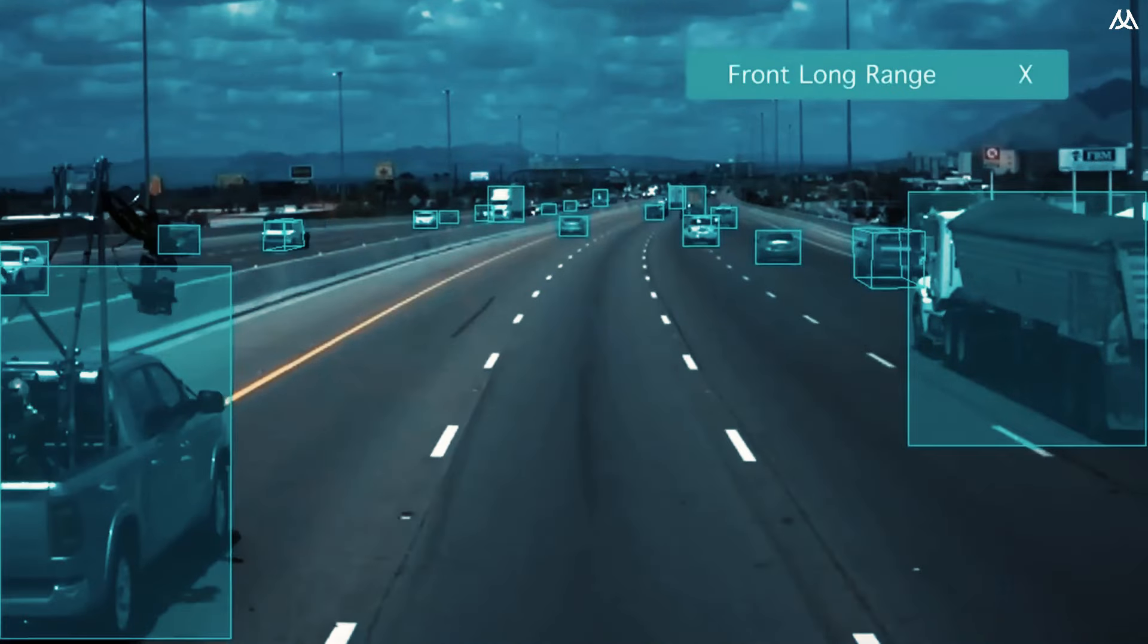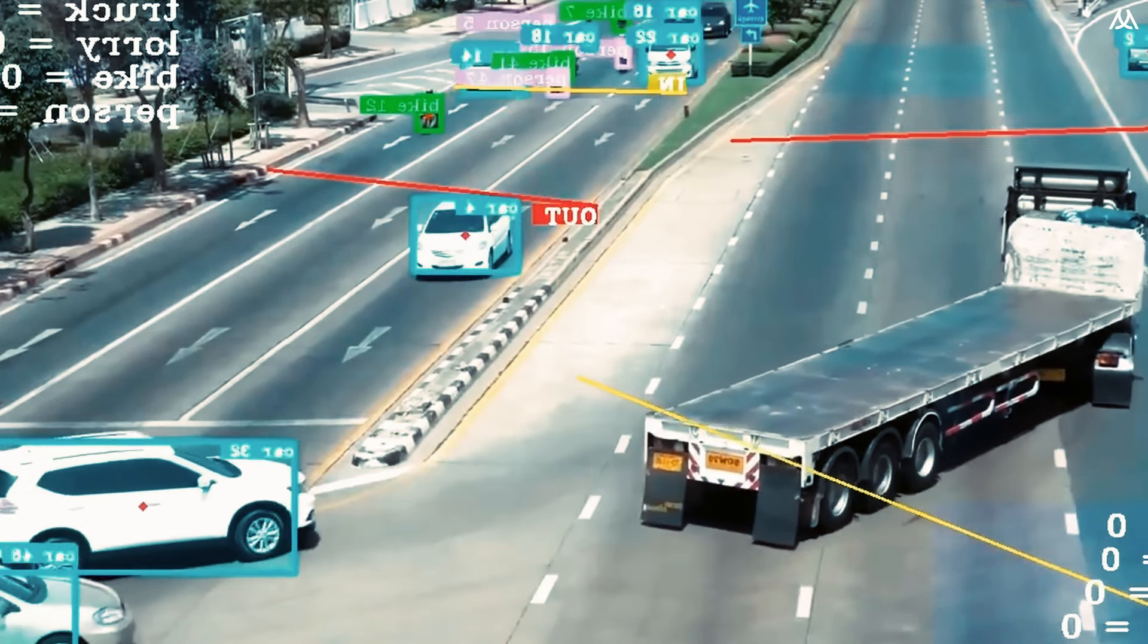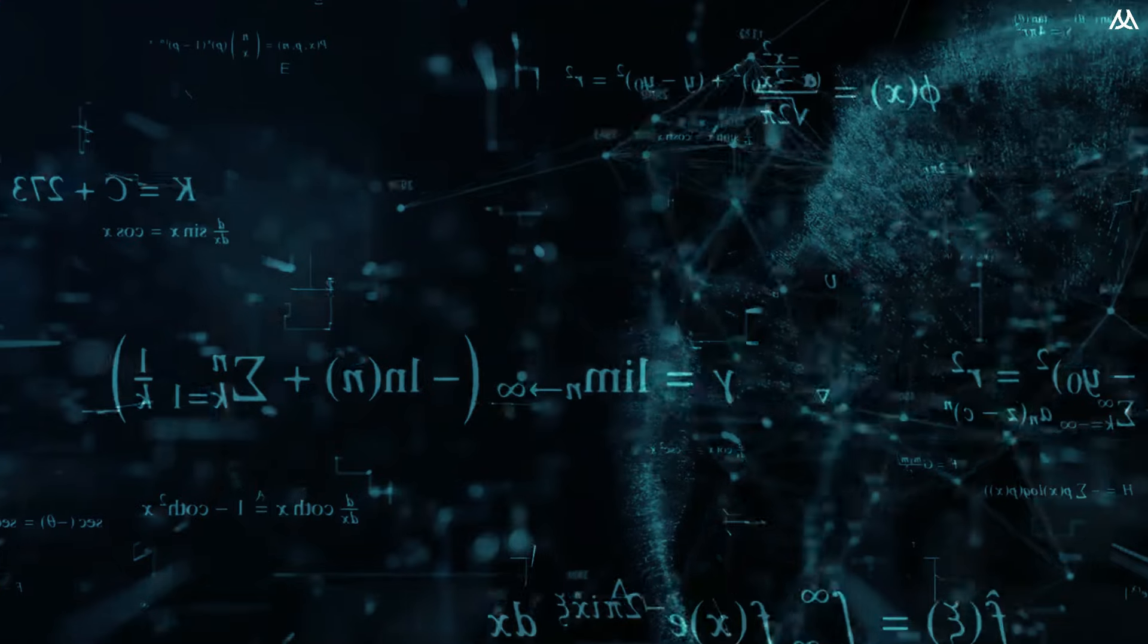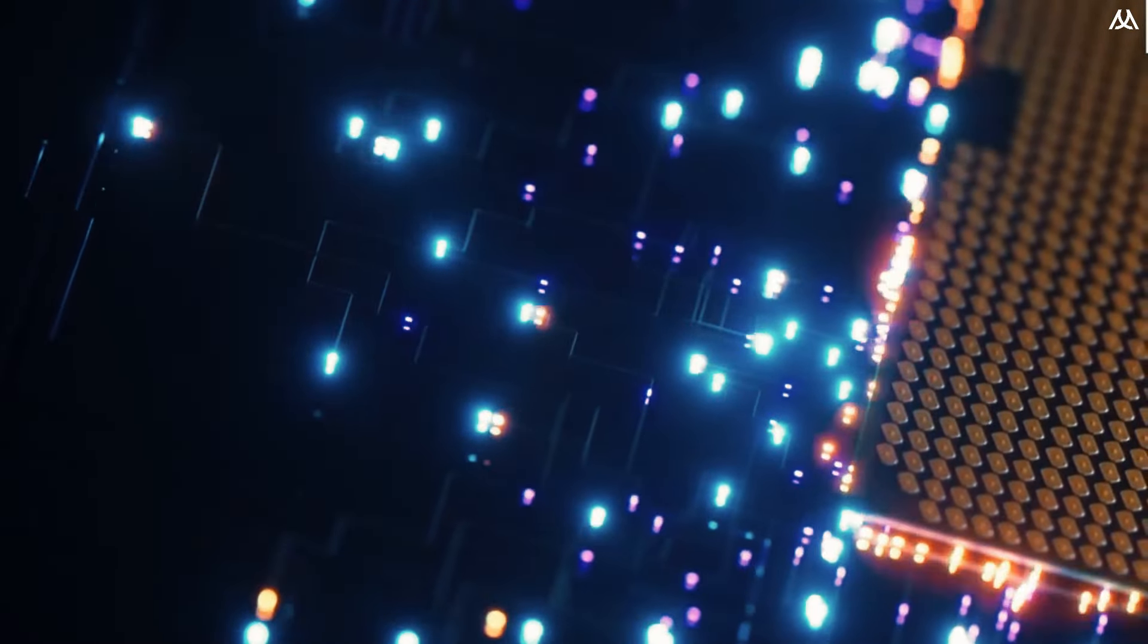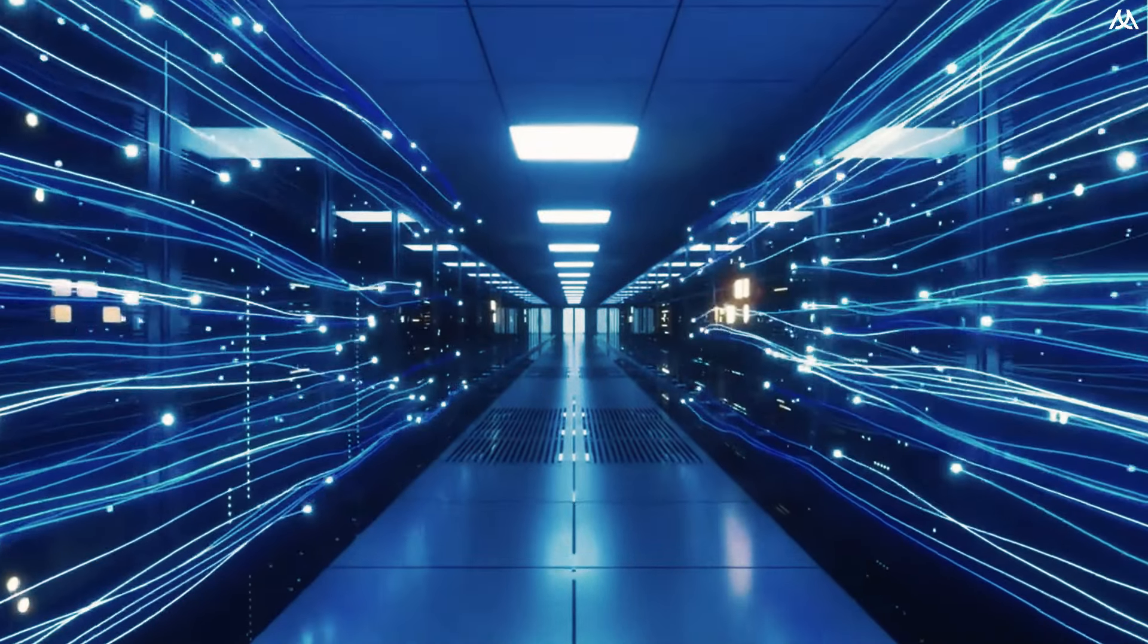Let's imagine you're tasked with predicting traffic flow in a city for the next month. That's a massive amount of data and variables to consider. Classical machine learning would struggle with such a task, but QML thrives in it. It could process and analyze all the data at once, predicting traffic patterns with astonishing accuracy.